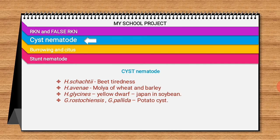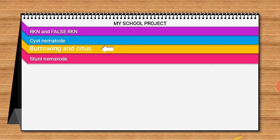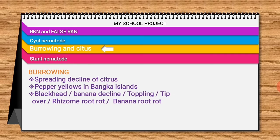Globodera rostochensis is the yellow potato cyst nematode and Globodera pallida is the white potato cyst nematode. Globodera rostochensis poses an important threat to potato production worldwide and is under domestic quarantine control.